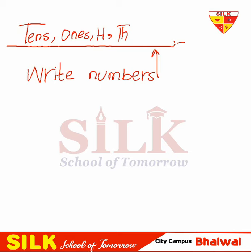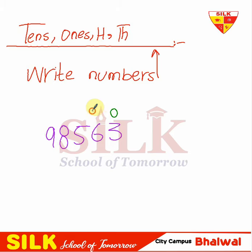So I have to write any number here. For example, 9, 8, 5, 6, 3. We have to write in 10s, 1s, 100s and 1000s. How do I write? First we write the place values: 1s, 10s, 100s, 1000s, and 10,000s.